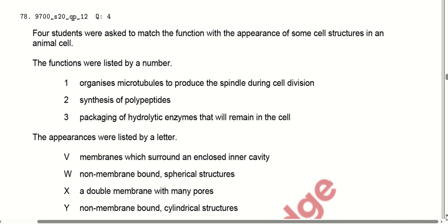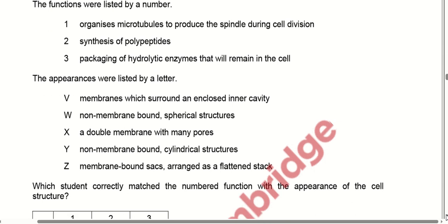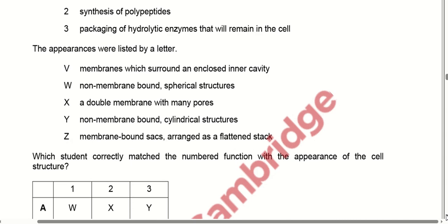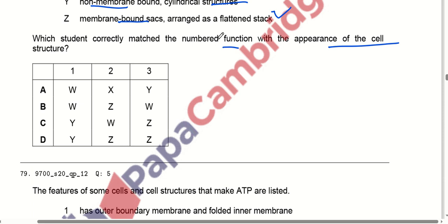Four students matched cell structure functions with appearances. Functions include: microtubules producing the spindle during cell division; synthesis of polypeptides; and packaging of hydrolytic enzymes. Appearances include: membranes surrounding an inner cavity (V), non-membrane-bound spherical structures (W), double membrane with pores (R), non-membrane cylindrical structures (Y), and membrane-bound flattened sacs (Z). Option C correctly matches numbered functions with cell structure appearances.